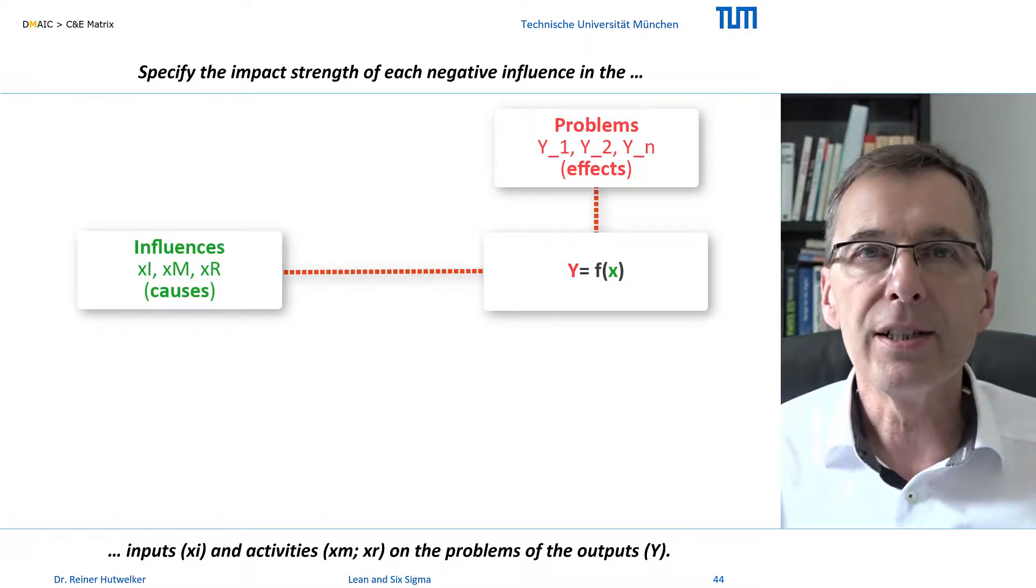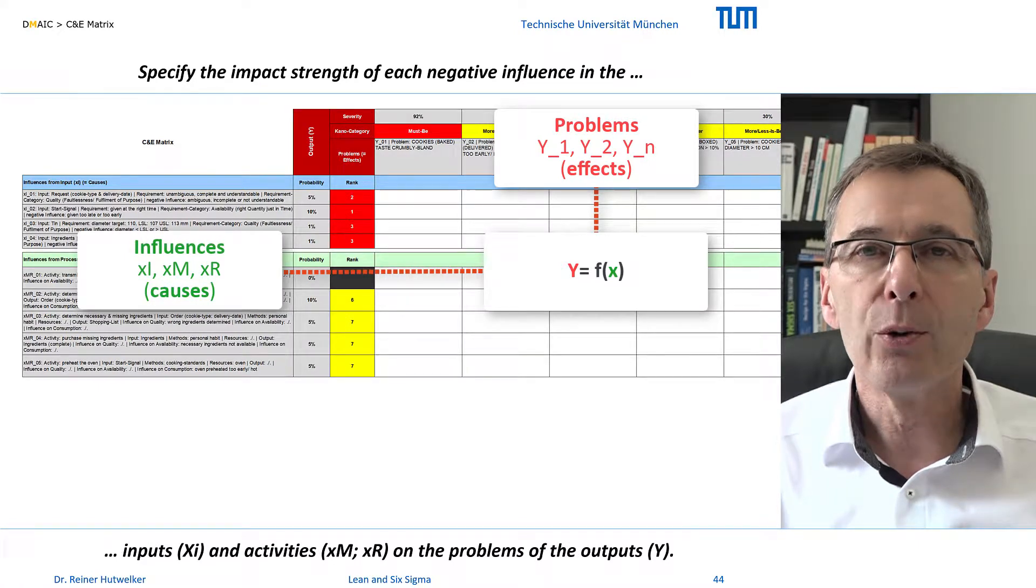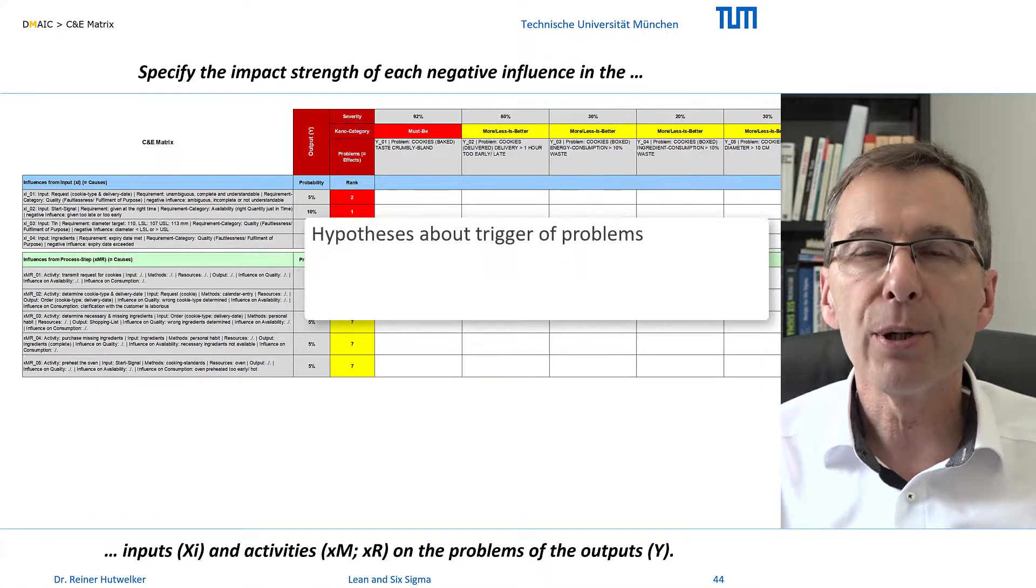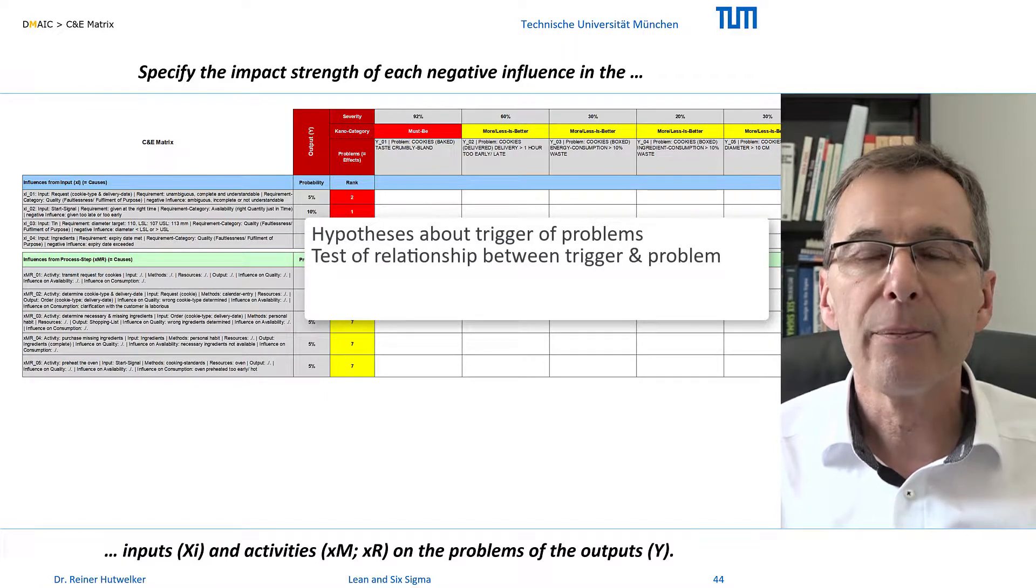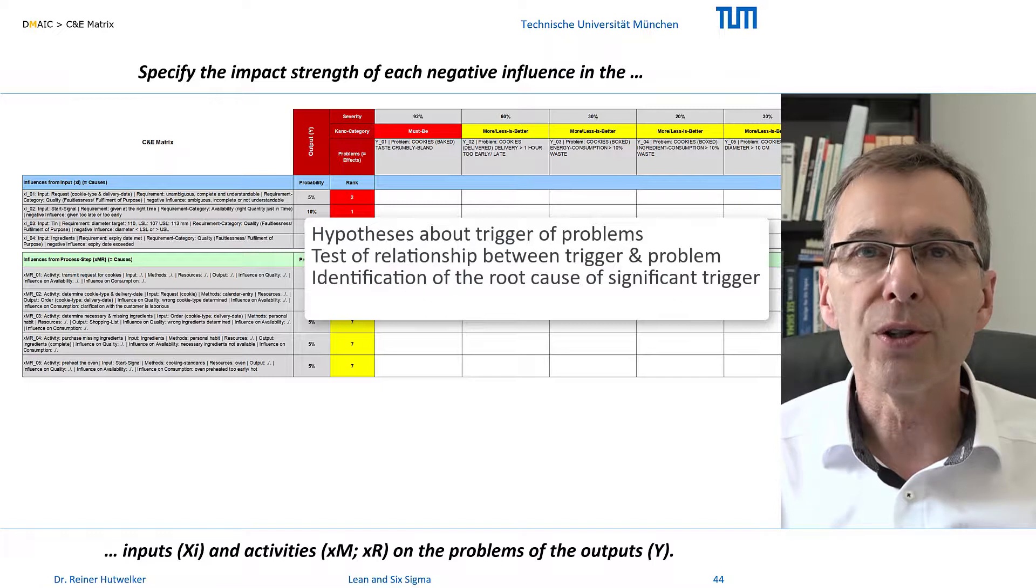For me, the C and E matrix is the heart of the DMIC, because every relevant X-Y relationship will be later translated into a hypothesis, for which data is collected, statistically tested, and the significant relationships become the starting point for root cause analysis. And you remember, the root causes are the interfaces for improvements.